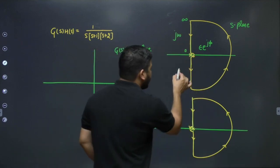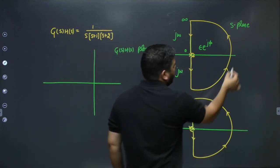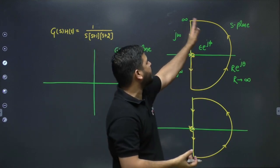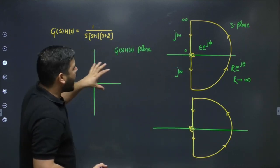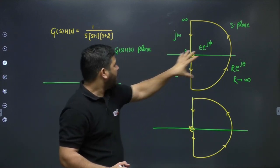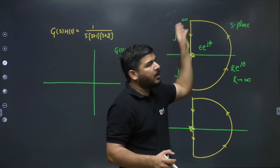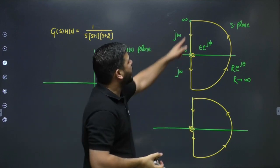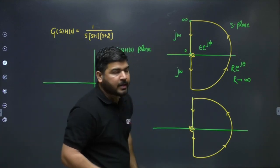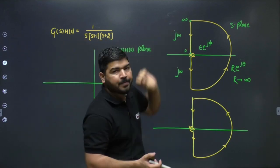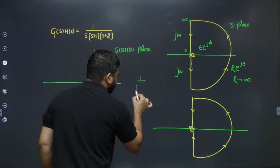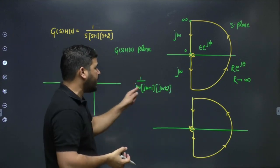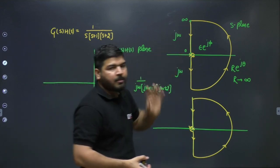Mapping all four parts is very lengthy. Instead, we can use only the jω axis part — replacing s with jω — and check all the answers from that alone. Substituting s = jω gives G(jω)H(jω) = 1 / [jω(jω+1)(jω+2)], with ω varying from ∞ to 0.